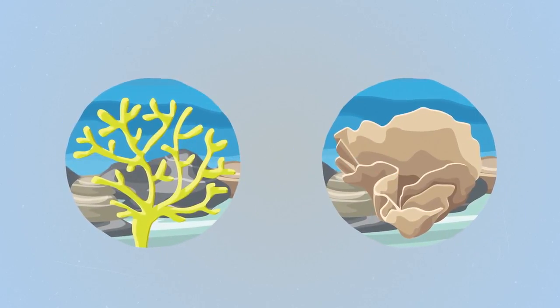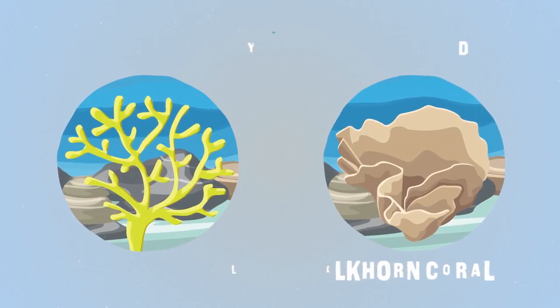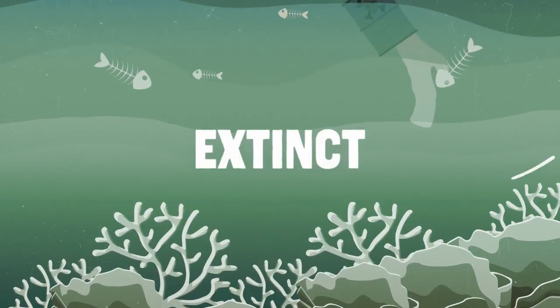Two of the most popular coral, staghorn and elkhorn, are critically endangered. This means they could become extinct in the wild.